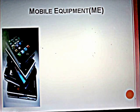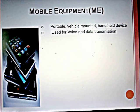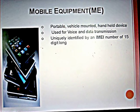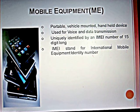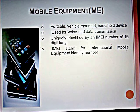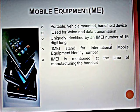The two entities are Mobile Equipment and Subscriber Identity Module, which is known as SIM. Mobile Equipment is a portable, vehicle-mounted, handheld device used for voice and data transmission. It is uniquely identified by an IMEI number of 15 digits long. IMEI stands for International Mobile Equipment Identity Number and is assigned at the time of manufacturing the handset.